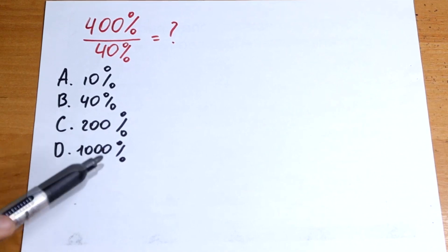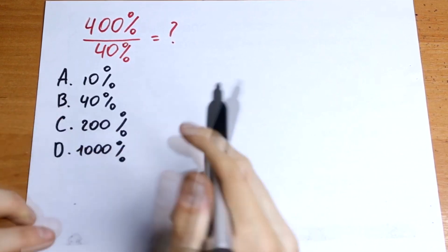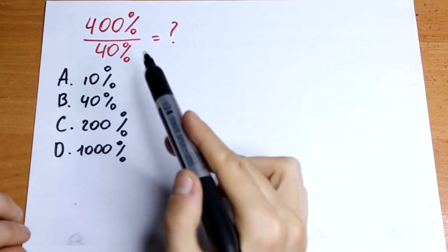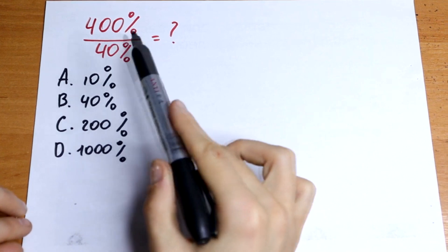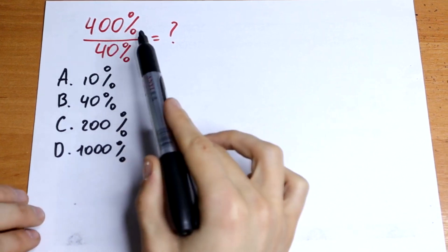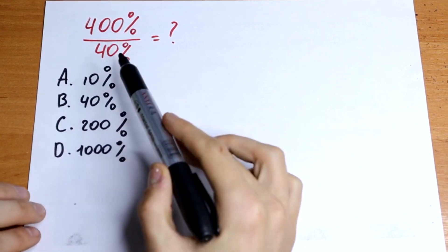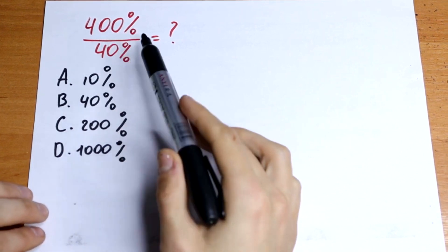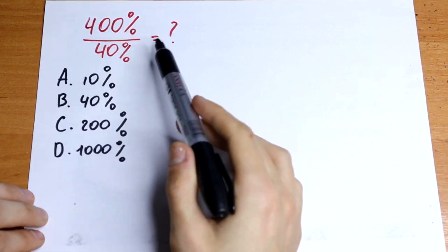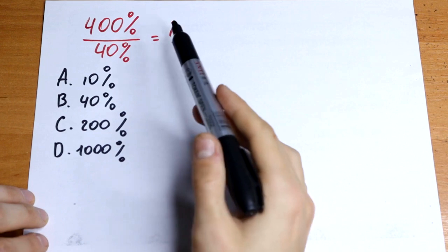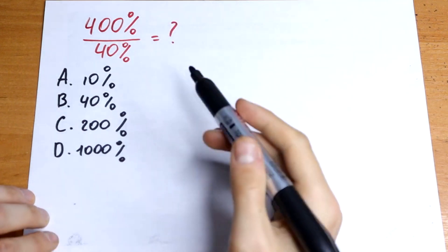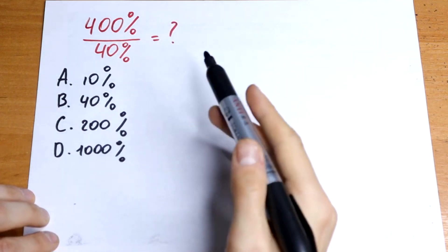Hello everyone, welcome back to MathMood. Here we have an interesting percent question: 400% over 40%, and we need to simplify and calculate this. How can I do this?